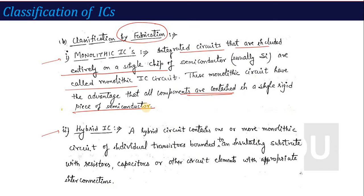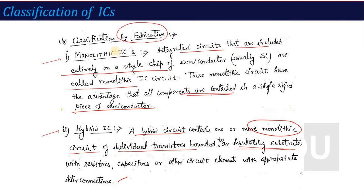A hybrid IC contains one or more monolithic circuits or individual transistors bonded to an insulating substrate with resistors, capacitors, and other circuit elements with appropriate interconnections. So to summarize: monolithic IC has all components on a single semiconductor chip, while hybrid IC combines more than one monolithic IC circuit connected together.